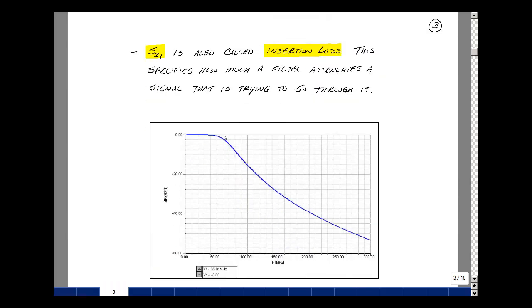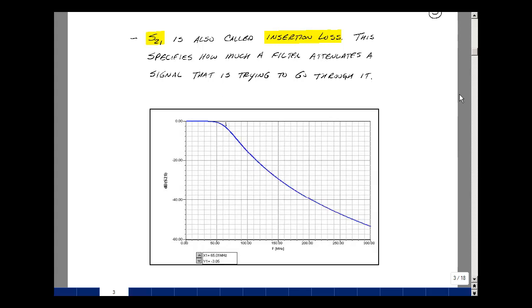The Bode plot that was shown on the previous page can also be displayed on the network analyzer. Besides doing Bode plots, it can also plot scattering parameters, and we're going to be measuring the scattering parameters of our filter. One particular one is S2,1, which is also called insertion loss. This specifies how much a filter attenuates a signal that's trying to go through it.